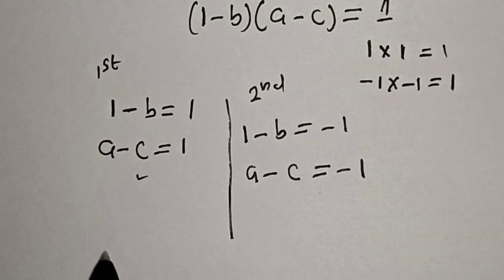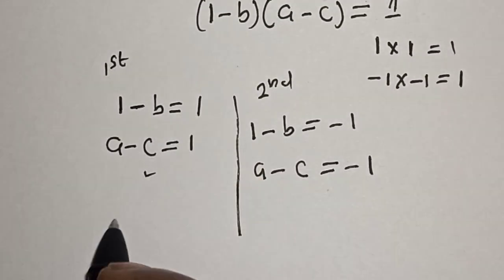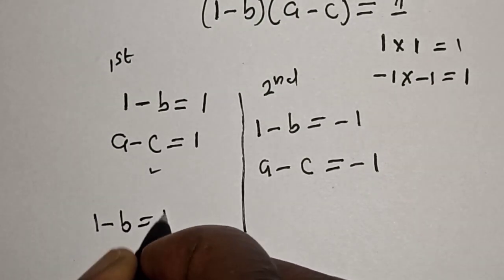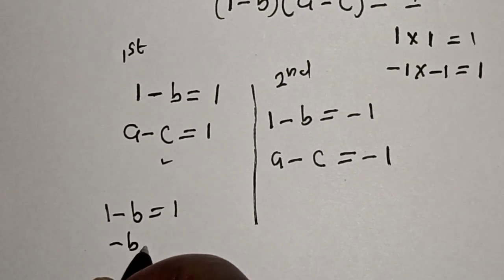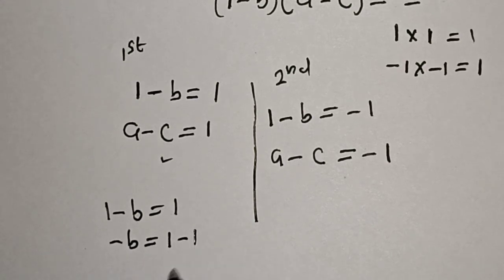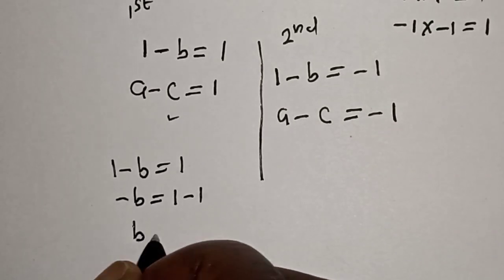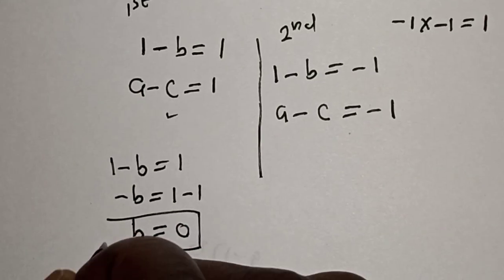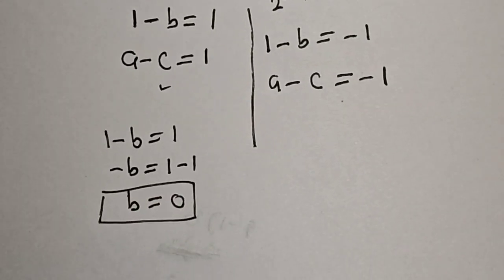From Case 1: 1 − B = 1, so 1 − 1 = B, therefore B = 0. We have gotten the value of B, which is equal to 0.